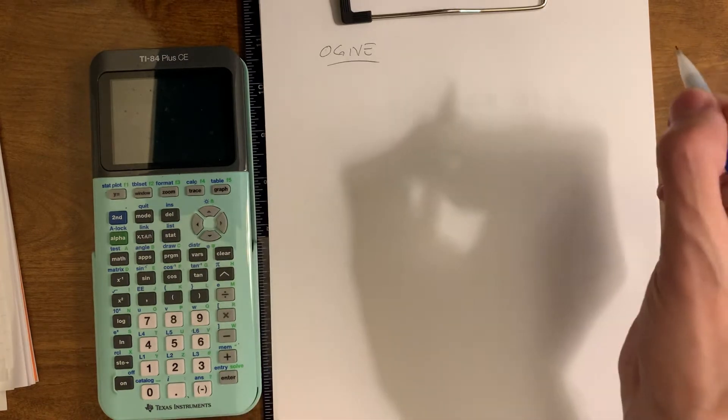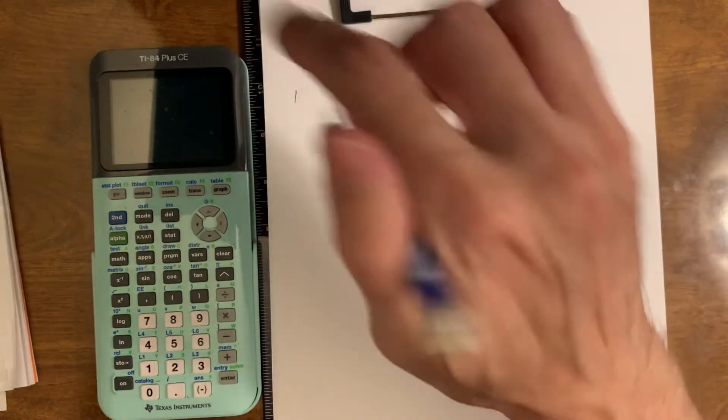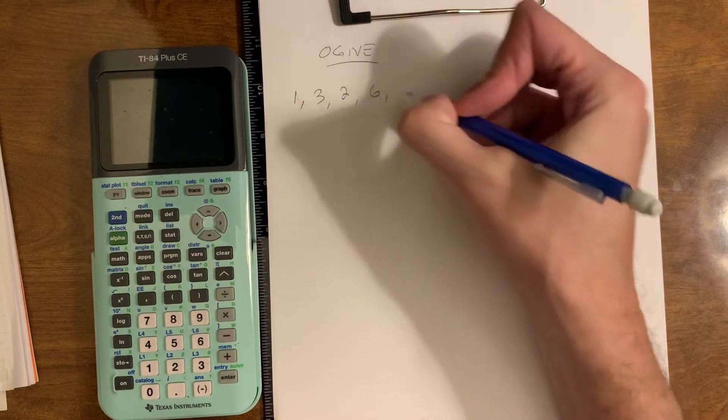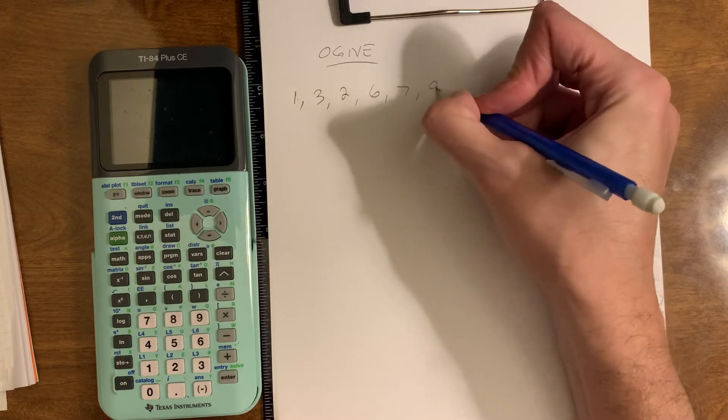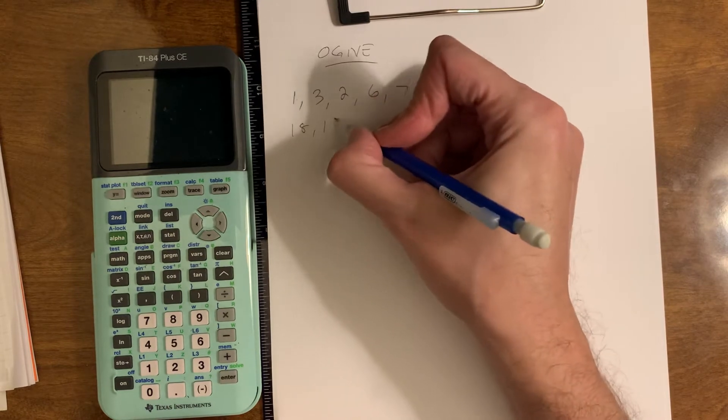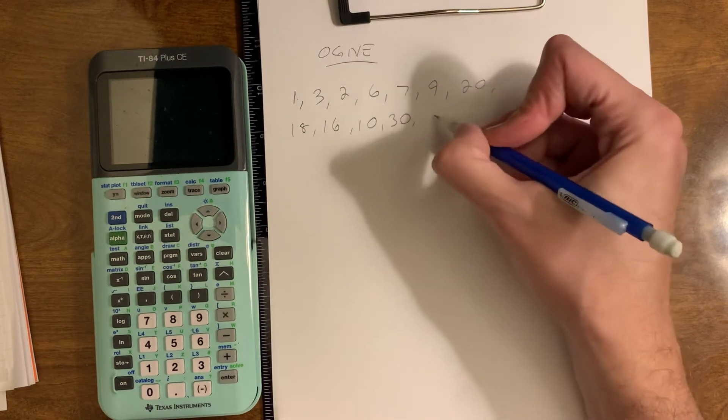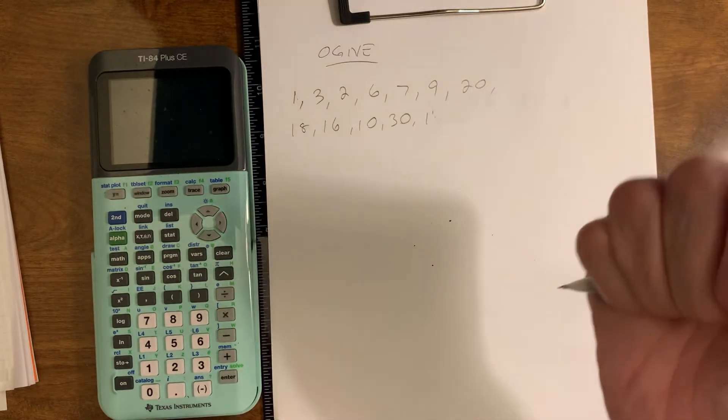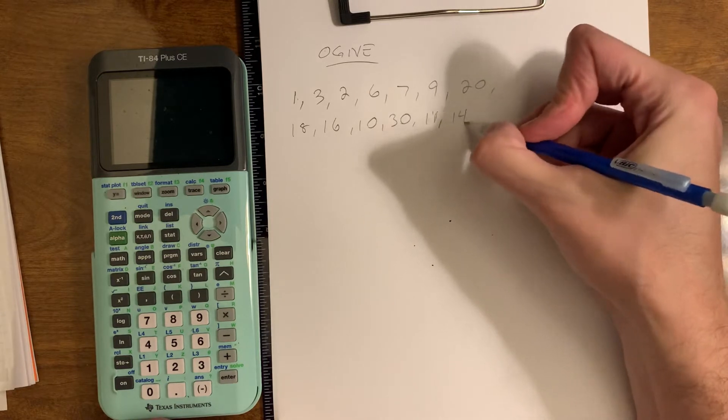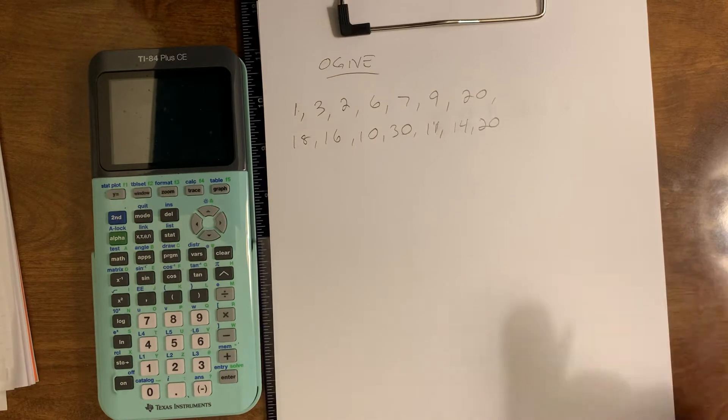I'm going to demonstrate that with an actual data set and we'll build one together. So write down the following numbers to make our ogive. We have the numbers 1, 3, 2, 6, 7, 9, 20, 18, 16, 10, 30, 11, 14, and another 20.